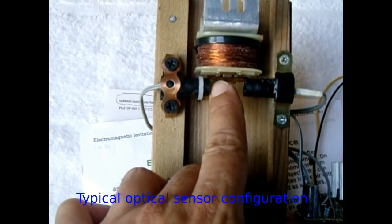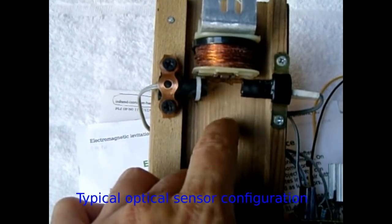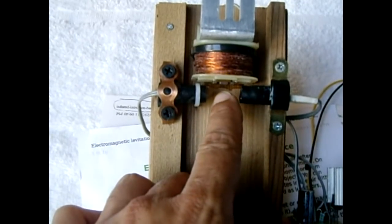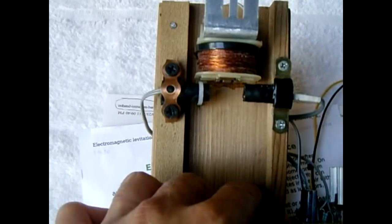This electromagnet has full power supplied to it. So, it wants to pull the object up. Now, once the beam is blocked, what will happen, the coil, the power will drop off. So, it's no longer getting 12 volts, it might get like three or four.